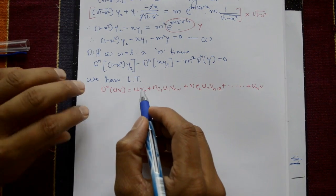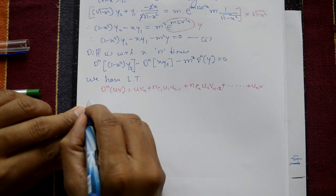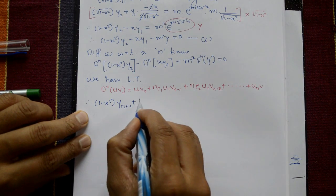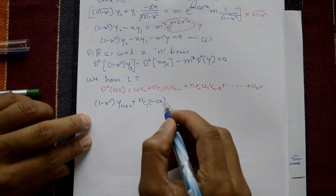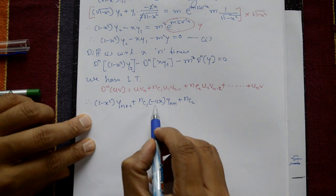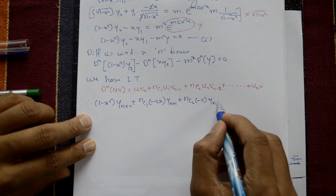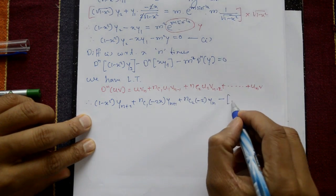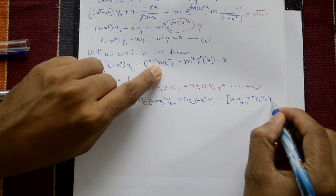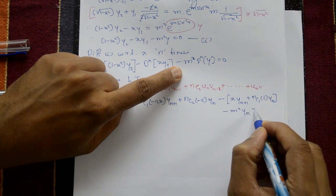Now, applying Leibniz's rule to each term. This is u part and this is v. Therefore, for the first term: 1 minus x square · y_{n+2}, plus nC1 · differentiate 1 minus x square gives minus 2x · y_{n+1}, plus nC2 · differentiate again gives minus 2 · y_n. Next is not possible, is a constant, you get 0. For the second term: x·y_{n+1}, plus nC1 · differentiation of x is 1 · y_n. Minus m square as it is, differentiate gives y_n equal to 0.